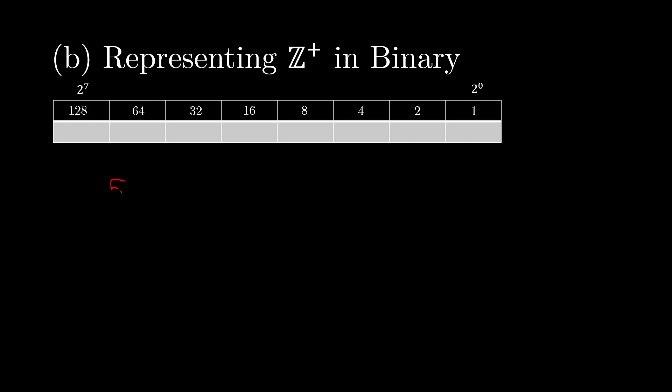So if we wanted to represent 52 in binary, we'd start from left to right. So we'd ask ourselves, does 128 fit into 52? The answer is no, so we add a 0. Then we move on to the next number. We ask ourselves, does 64 fit into 52? The answer is no, so we add a 0. Then we ask, does 32 fit into 52? The answer is yes, so we add a 1. Then we have to do 52 minus 32, and that gives us 20.